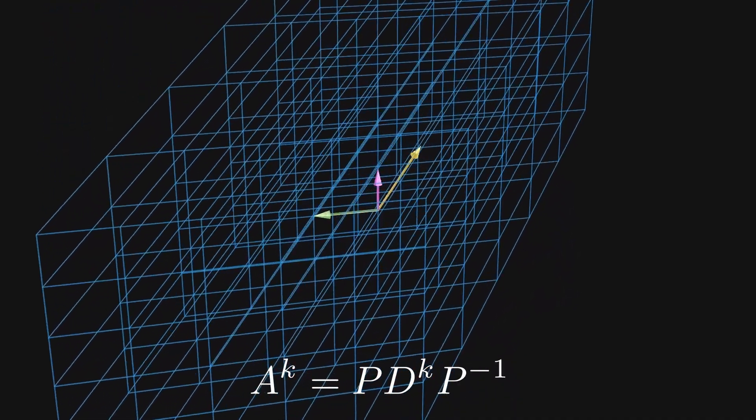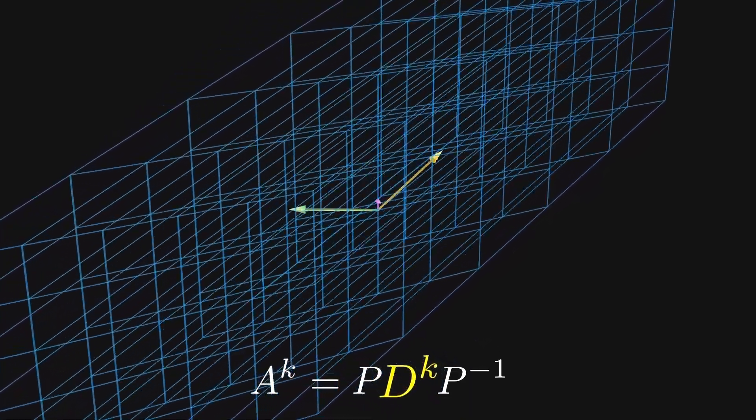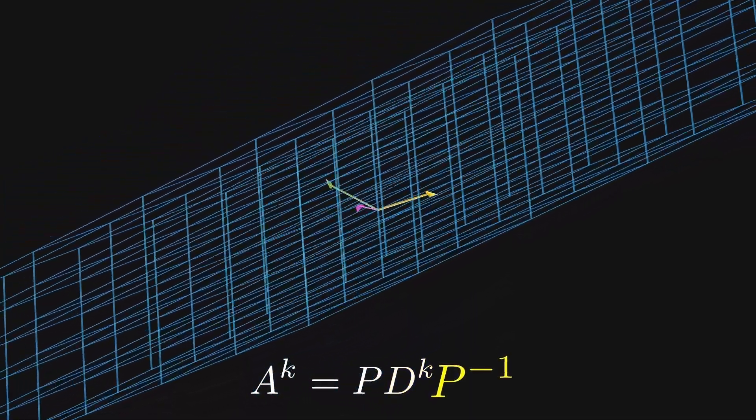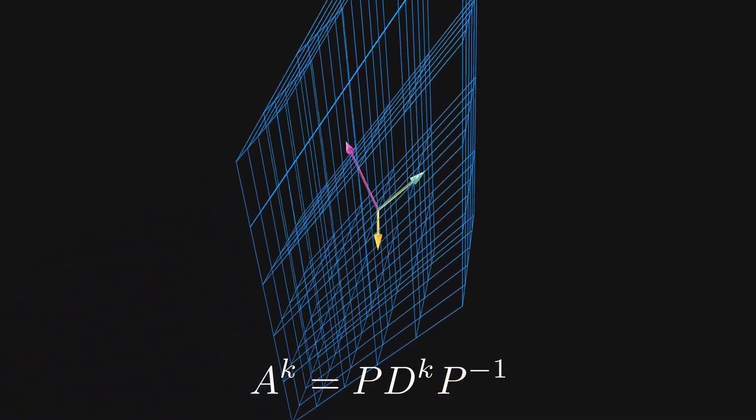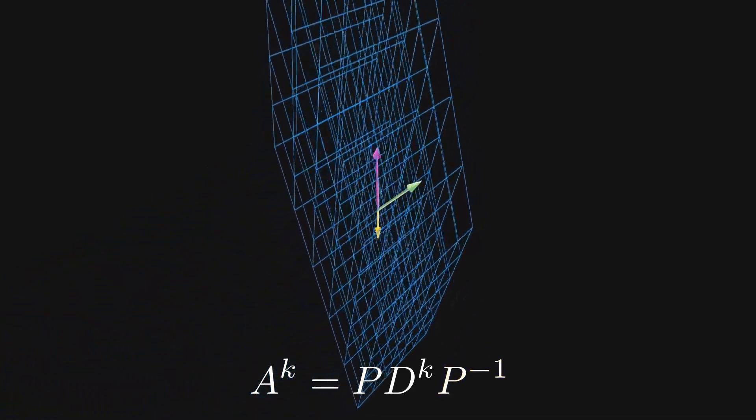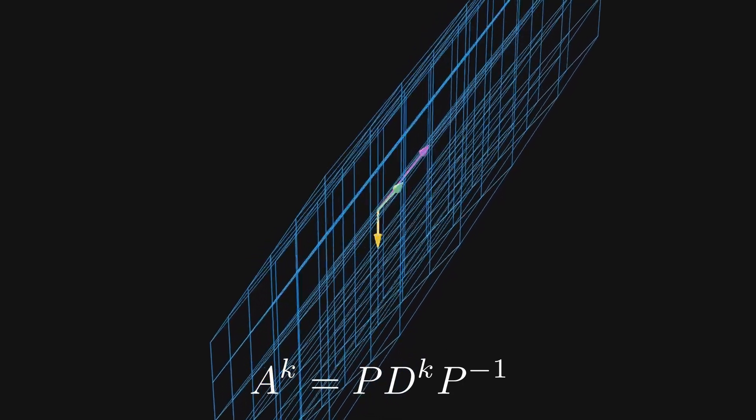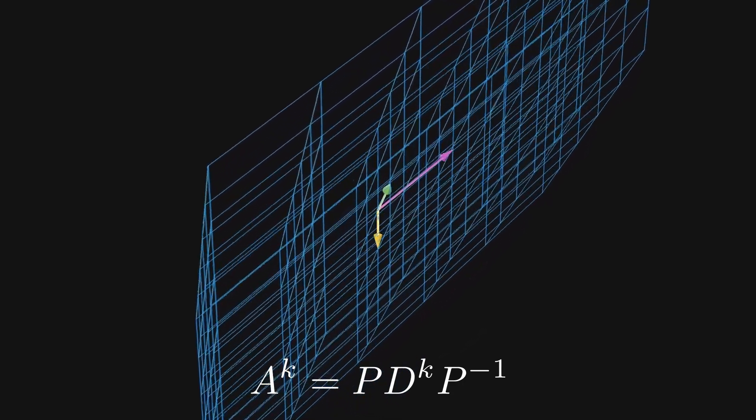First, you change your basis, then you scale your direction invariant vectors, then you change back to the regular basis. This has the same effect on 3D space as just applying the original transformation, but we have utilized a change of basis.